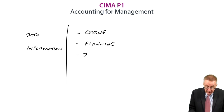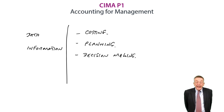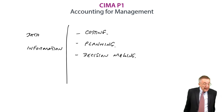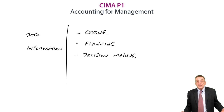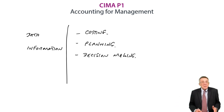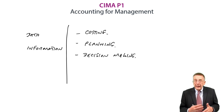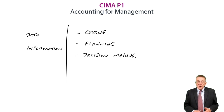The third managerial process is decision making. The example I've given is the one I referred to earlier — deciding what selling price to charge for a product. It may be management who decides, but it's the management accountant who will provide the information and advise them on what sort of price they should charge.